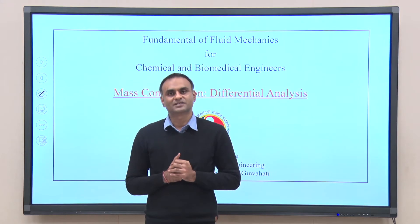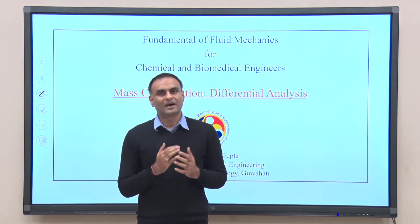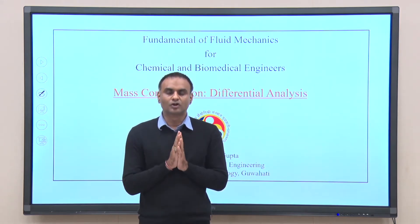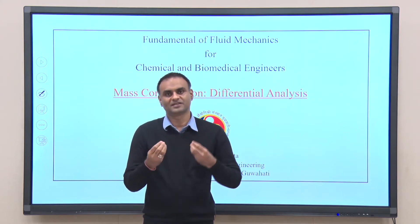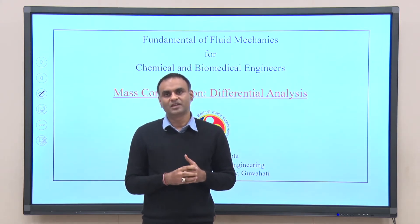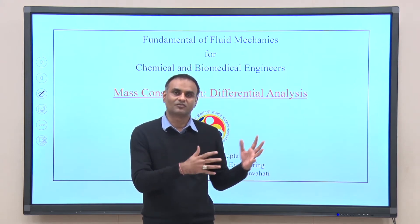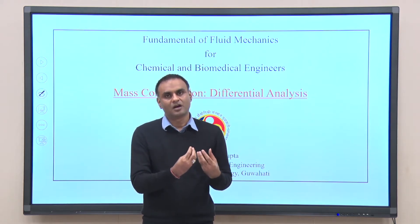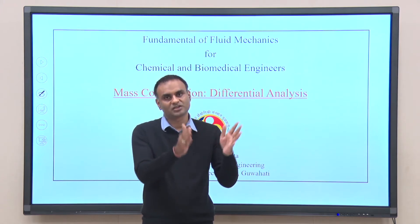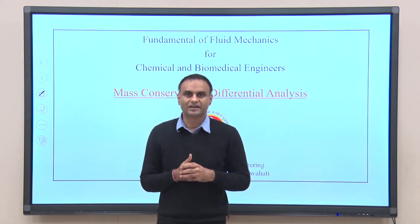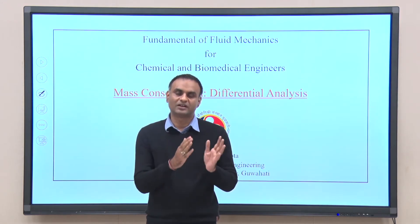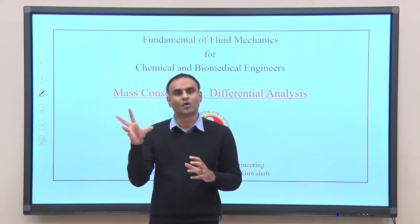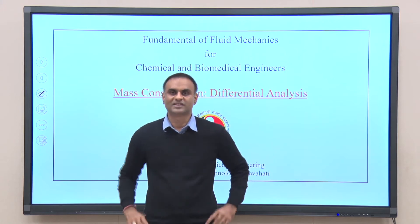In the previous lecture, we derived the mass conservation equation by taking a control volume of cuboid type having dimensions dx, dy, and dz. We then applied the mass conservation equation derived from the Reynolds transport theorem, implementing two terms: the volume integral del by del t over the control volume, and the integral of rho v dot dA over the 6 faces of the cuboid.